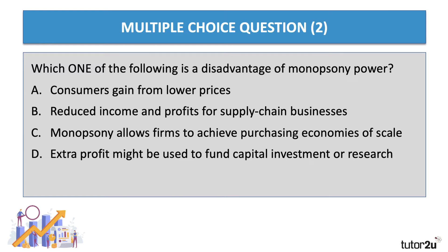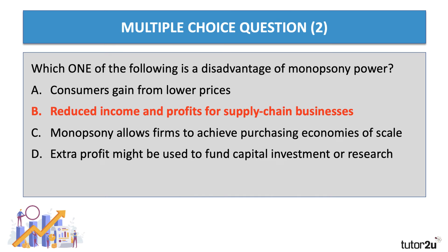Question two. Which one of the following is a disadvantage of monopsony power? Please press the pause button. So which one of the following is a disadvantage of monopsony power? Four statements — the right answer is B. Supply chain businesses, if you're a farmer or a grower, for example, supplying to a supermarket, the buyer might use their bargaining power to drive the price they pay to you down. That's going to lower your income and profits. Indeed, many supply chain businesses might have their commercial viability threatened by monopsony power.